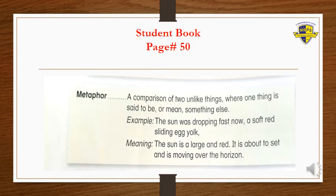On the same page number 50, we will read the definition of metaphor. A metaphor is a comparison of two unlike things where one thing is said to be or mean something else. For example: 'The sun was dropping fast, now a soft red sliding egg yolk,' meaning the sun is large and red, about to set, and moving over the horizon.